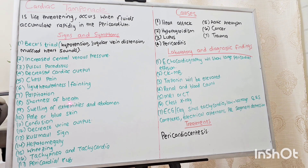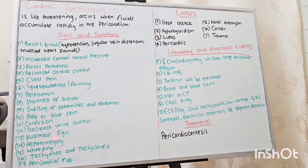Additional symptoms include palpitations, shortness of breath, swelling of extremities and abdomen, pale or blue skin, confusion, decreased urine output, hepatomegaly, wheezing, tachypnea, tachycardia, and pericardial rub.